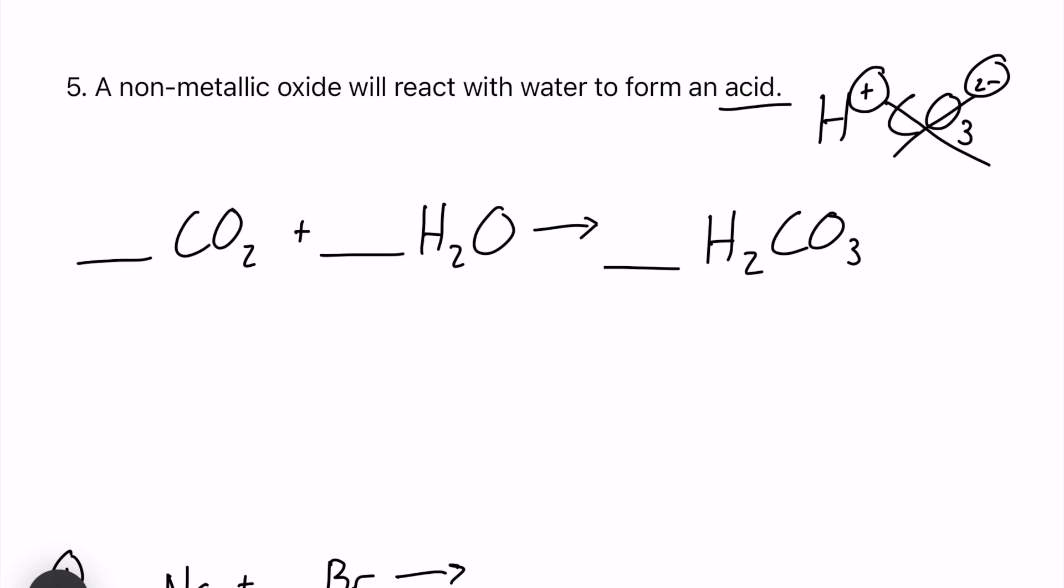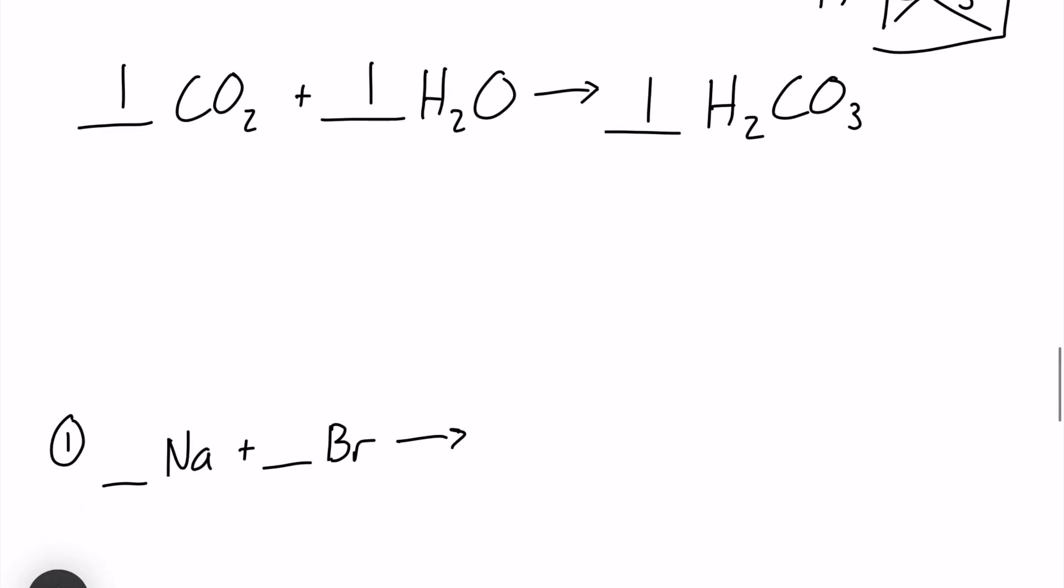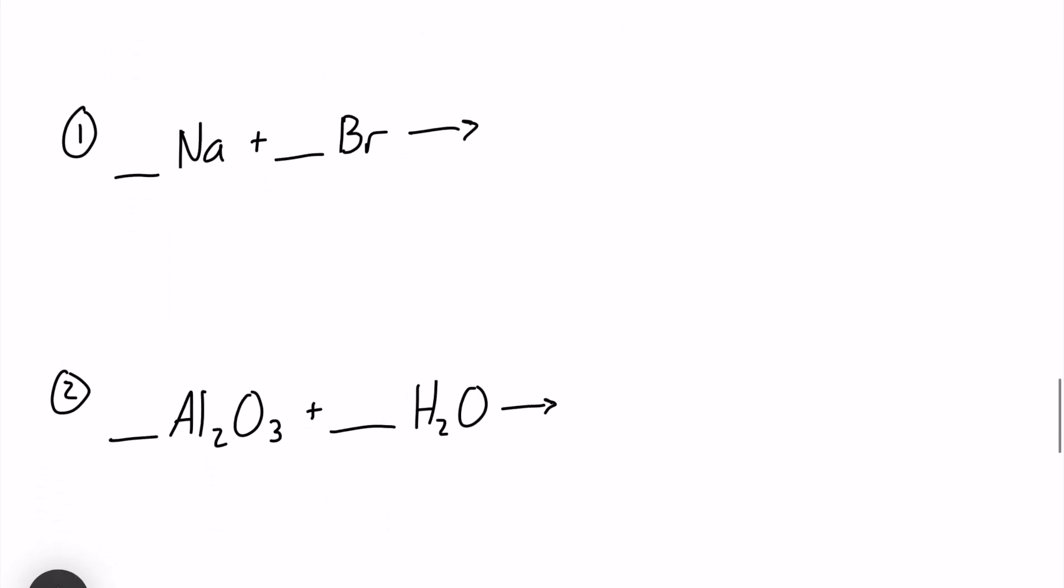We can go ahead and balance this up. I think it's going to be all ones across the board. So we have 1 carbon, 1 carbon, 3 oxygen, 3 oxygen, and 2 hydrogen. That looks fantastic to me. So again, if you're unsure as to how I got this CO3 ion, please go check out that decomposition video. That will help immensely.